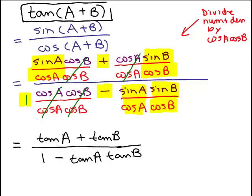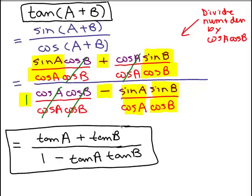So we've got: the tangent of A plus B is equal to the tangent of A plus the tangent of B, all over 1 minus tangent of A times tangent of B. We found out it's not equal to just tangent A plus tangent B — that's only the numerator — because there's also a denominator, which is 1 minus tangent A tangent B. On the next video, I'm going to do some problems showing how we can use this formula.